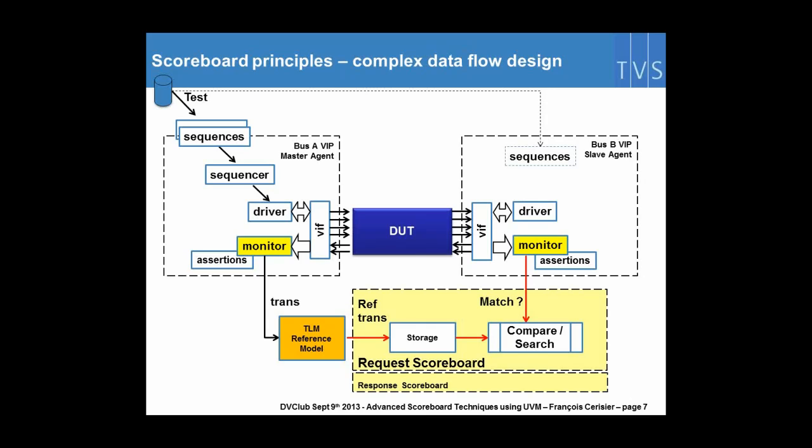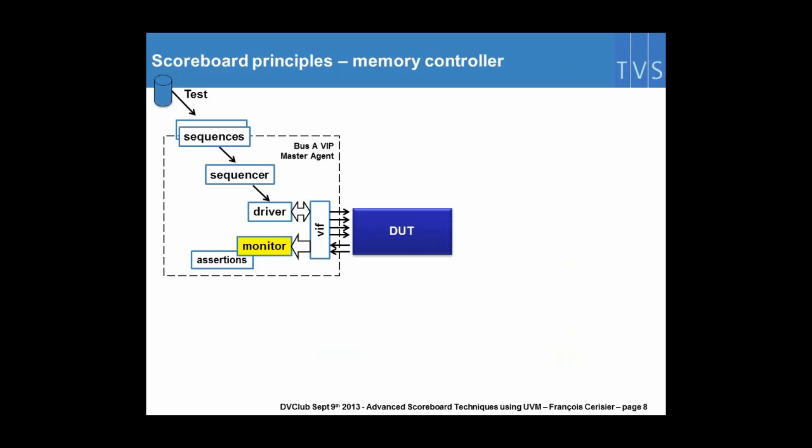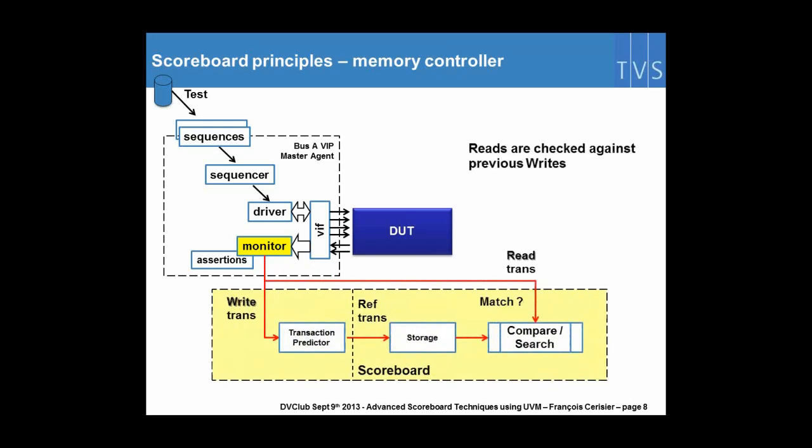This was for designs which are more like data path. Now, if you have designs which are more like buffers or memory, you may not have the second agent, the slave agent looking at the transaction, in which case what you consider here in the scoreboard is to check the data that you read is actually the data that has been written by previous transactions.